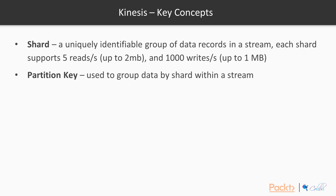The partition key is used to group data by shard within a stream. This is useful for guaranteeing ordering — for example, if consuming from a Twitter feed and you want all tweets from a given user on the same shard for ordered processing, you'd use the user ID as the partition key, ensuring all events from that user land on the same shard.